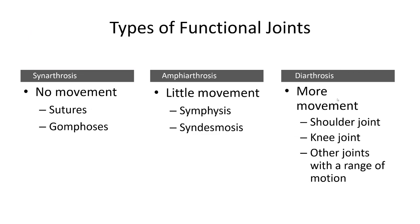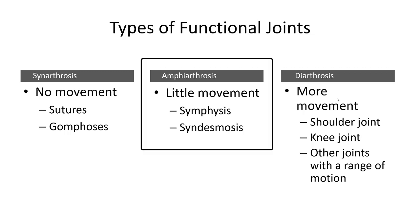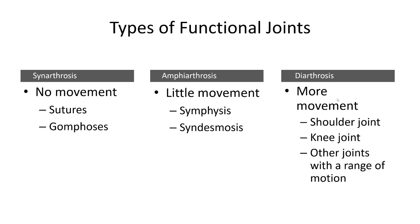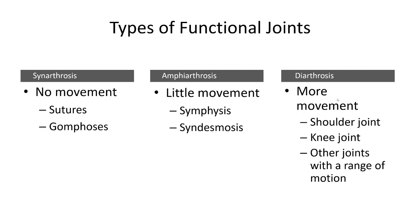The three types of functional classifications begin with a synarthrosis joint, which are immovable. Amphiarthrosis has some slight movement but is more structural. Finally, the freely moving joints we think of as our shoulder, elbow, etc. are the diarthrosis joints. These are contained within joint capsules and have a wide range of movements.